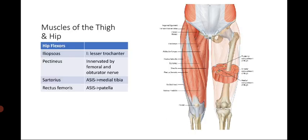For the muscles of the thigh and hip, there are several hip flexors. We have the iliopsoas, composed of the iliacus and psoas muscles, with common insertion at the lesser trochanter. We have the smaller pectineus muscle, innervated by the femoral and obturator nerve. We also have the sartorius, originating from the ASIS and inserting into the medial tibia, crossing two joints, and the rectus femoris, also crossing two joints from the ASIS towards the patella.